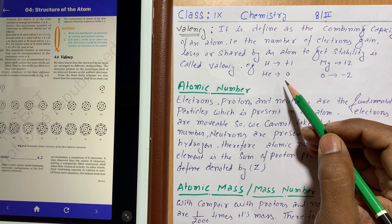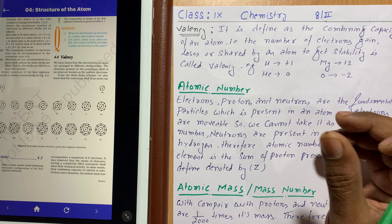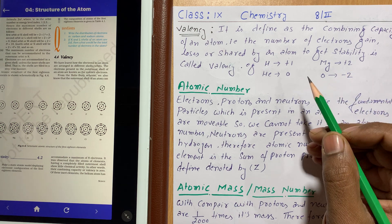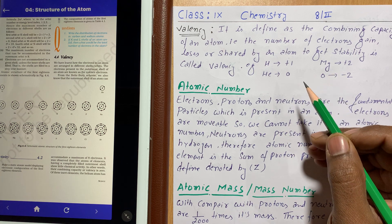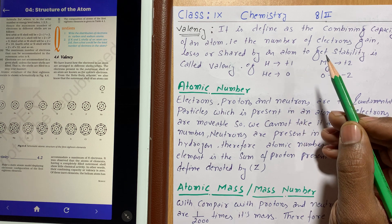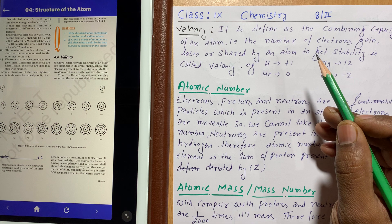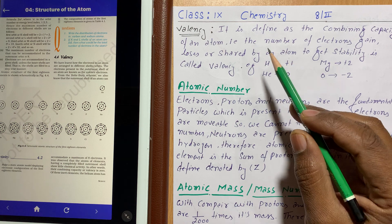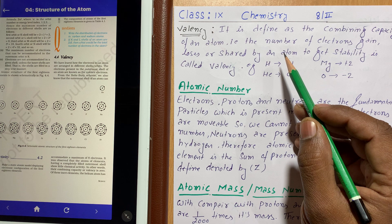Any atom can be stable or unstable. To become stable, an atom either loses electrons, gains electrons, or shares electrons with another atom. The number of electrons it loses, gains, or shares defines its valency. For example, if an atom loses one electron to become stable, its valency is one.